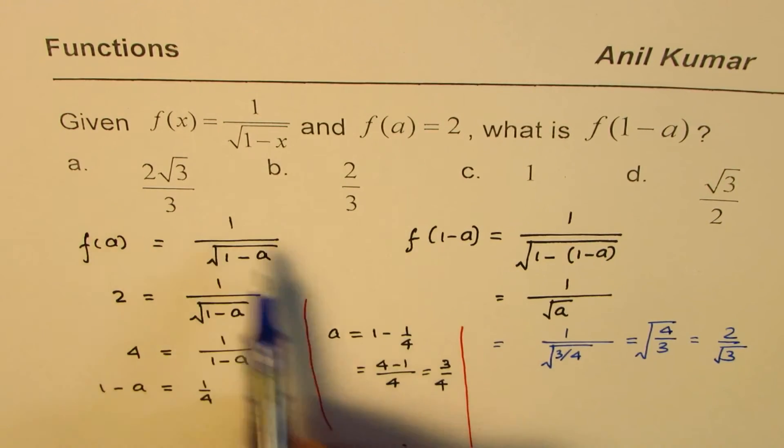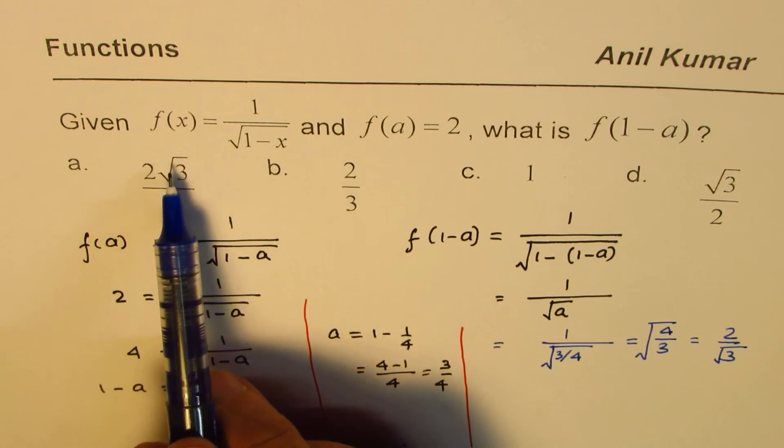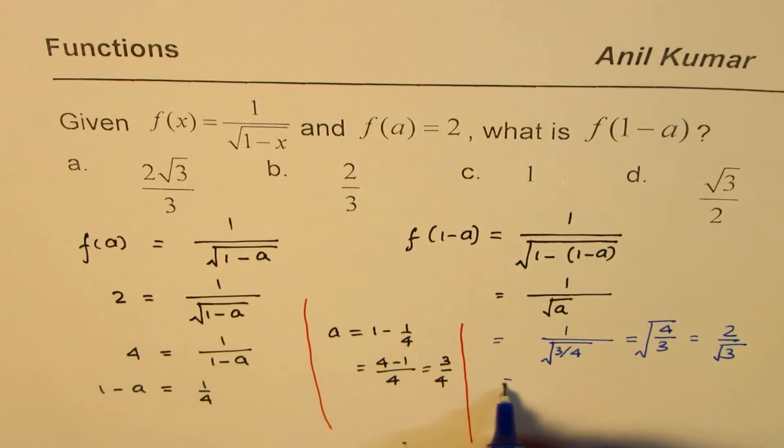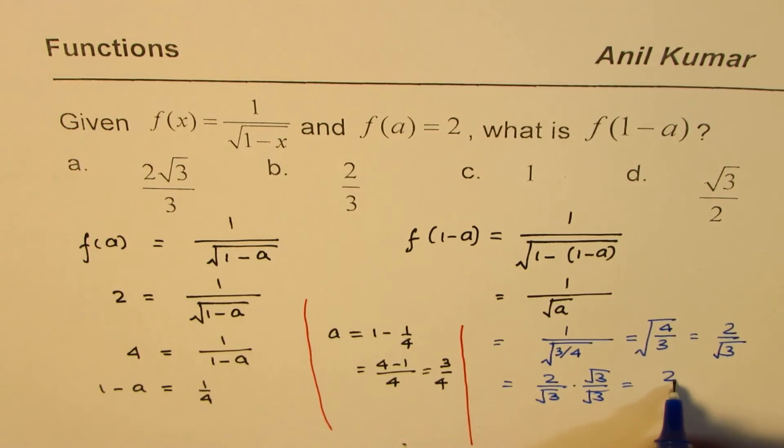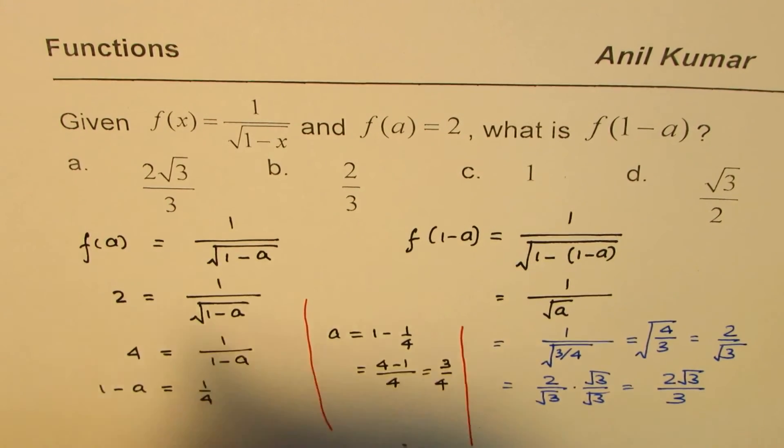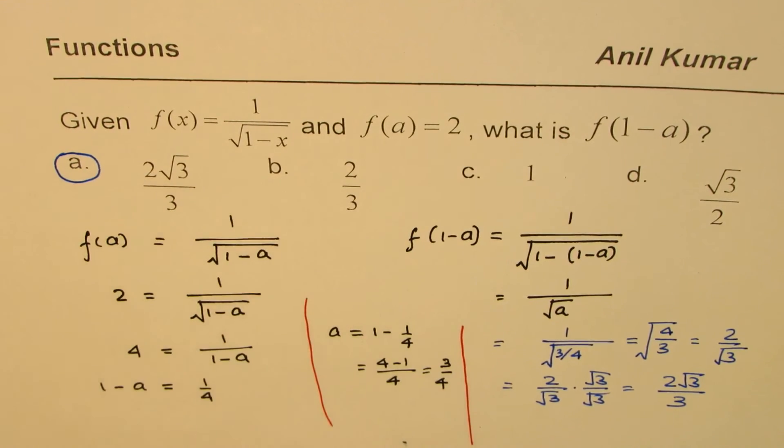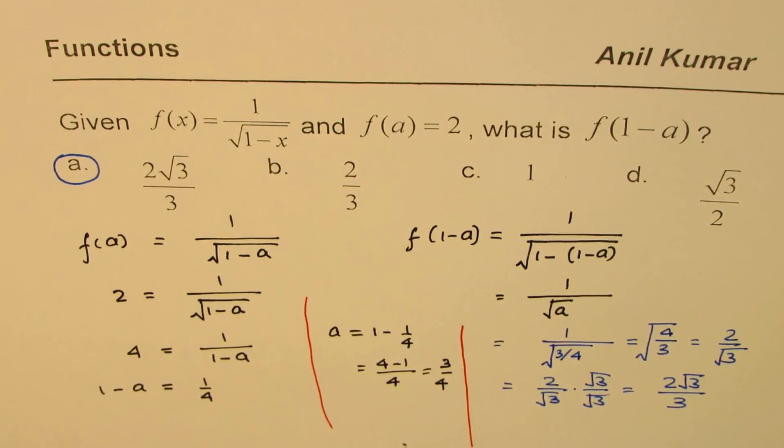Now, we don't have this as an option, but we do have 2 square root of 3 over 3, which you get by rationalizing this. So, you get 2 over square root of 3 times square root 3 over square root 3, and that gives you 2 square root 3 over 3. So, a is the right option. So, that is how you can actually solve this question.